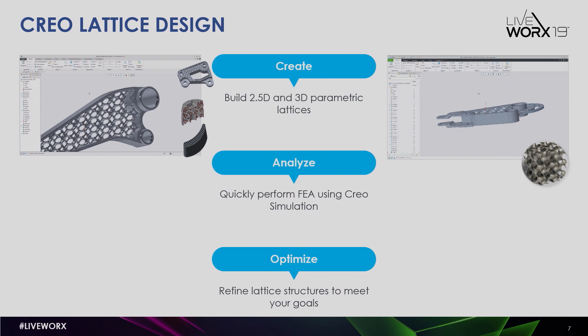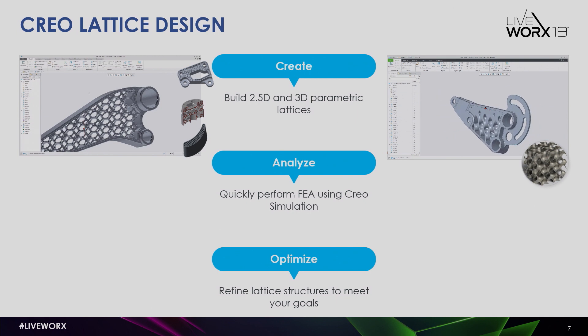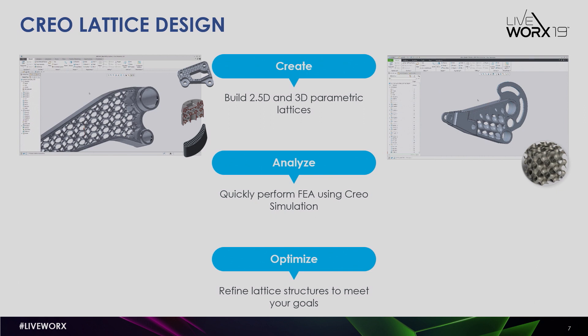Leveraging the existing lattice feature we have inside Creo, you can now simply specify a formula-driven lattice as a unit cell, and it will then populate your volume with that lattice structure, even allowing you the ability to vary the density of those complex lattices.